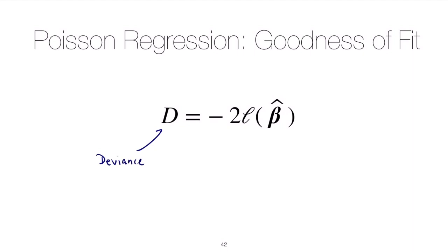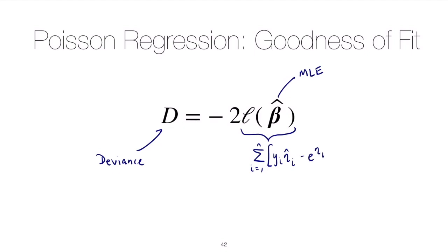We have negative 2 times the log-likelihood evaluated at the MLE found through the maximization procedure. This log-likelihood is the sum from i equals 1 up to n of — in the case of the Poisson — y_i times our estimate of the linear predictor η̂_i, where the beta hats sit inside that η̂, minus e to the η̂_i, minus the log of y_i factorial.